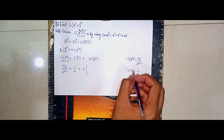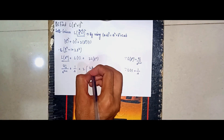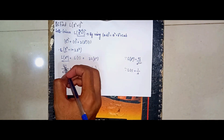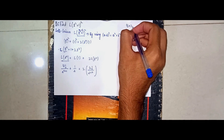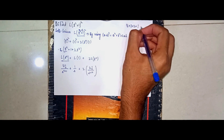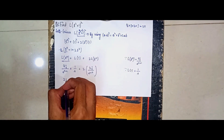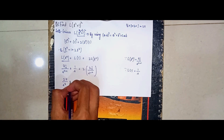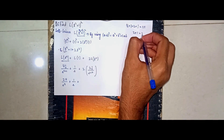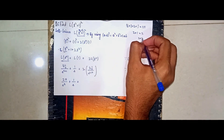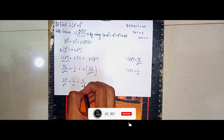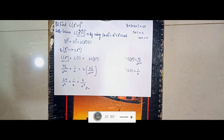Continuing with the same formula for t²: 2! / s^(2+1). Now 4! = 4×3×2×1 = 24, so that term is 24/s⁵. Plus 1/s. And 2! = 2, so 2×2 = 4, giving 4/s³. So the final answer is 24/s⁵ + 1/s + 4/s³.